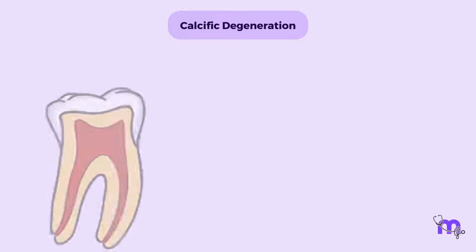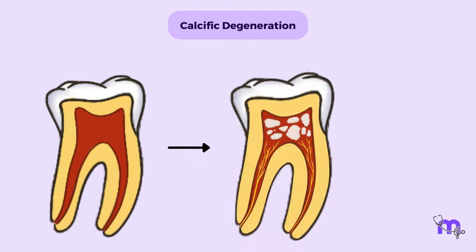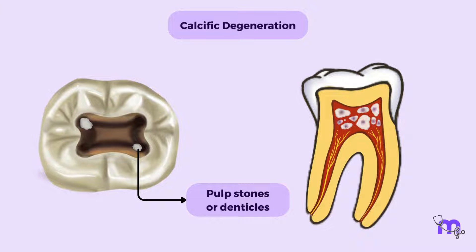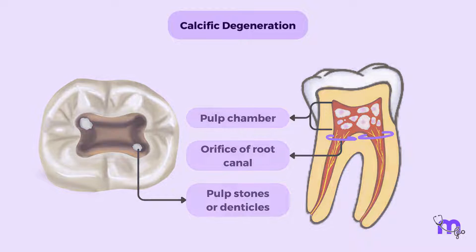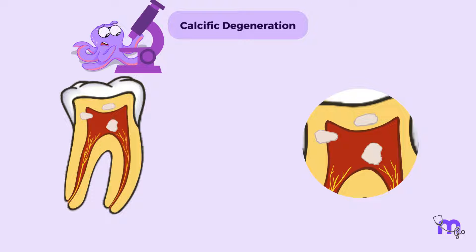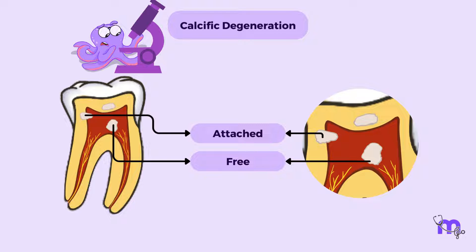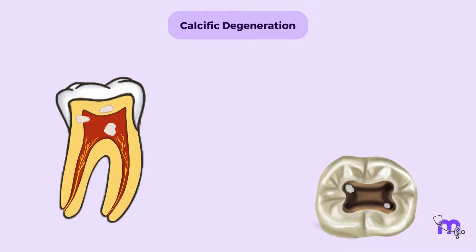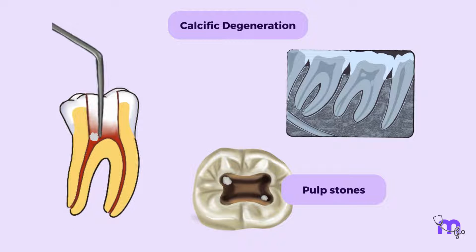Calcific degeneration is seen when the pulpal tissue gets replaced by calcific material like pulp stones or denticles. These stones are usually present in the pulp chamber and can block the canal orifices. Do you recall the oral histology lessons about the different kinds of pulp stones — namely free, attached and embedded? Any of these can be present within the chamber, making it indistinguishable on a radiograph. A lot of times, pulp stones are discovered once we start with the access cavity preparation. Usually harmless, these can pose challenges in performing root canal treatment.